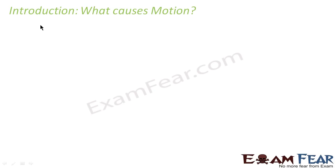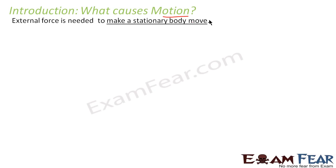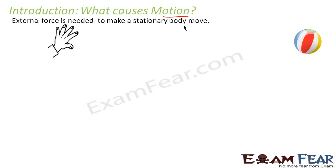Let's think of what causes motion. We have already discussed in our previous lessons that motion is nothing but change in position of an object with respect to time. So what causes an object to move? An external force is needed to make a stationary body move. You think of any common example around you. For example, you have a ball. The ball will stay at rest until and unless an external force is applied on it.